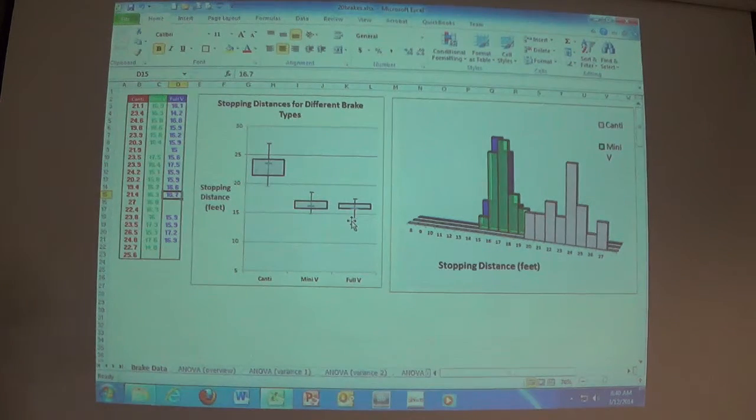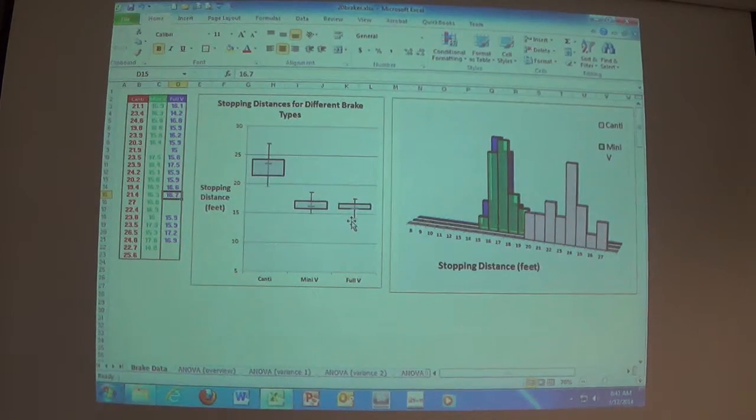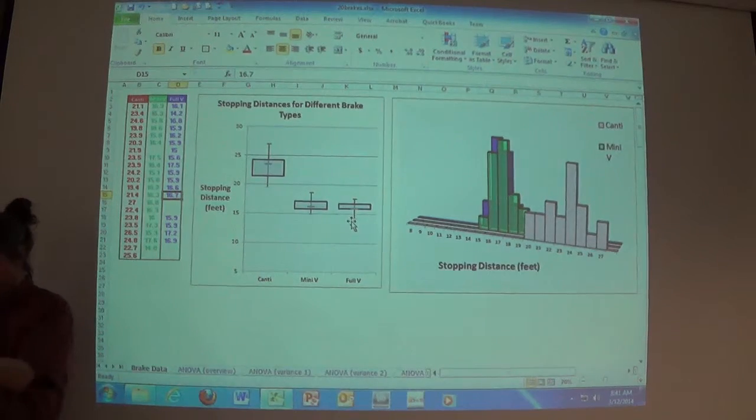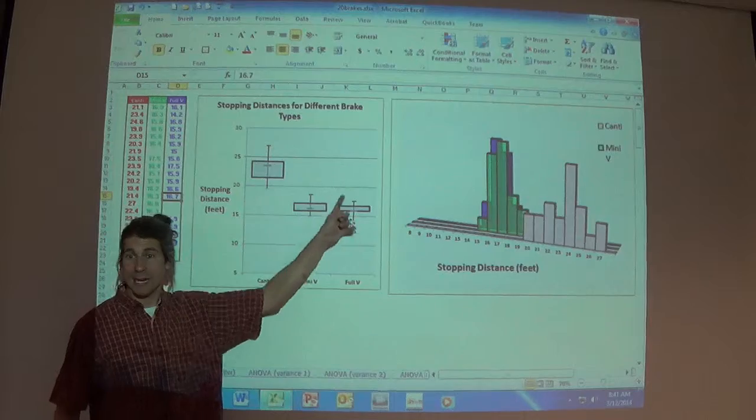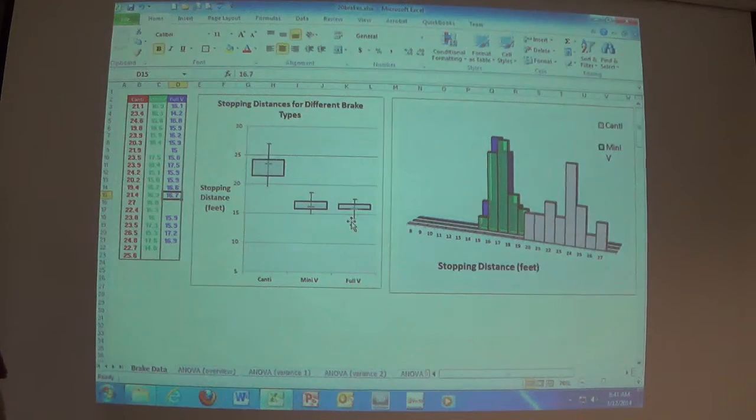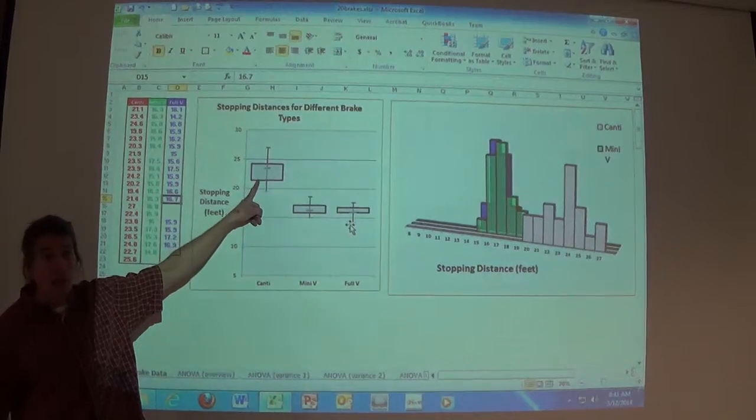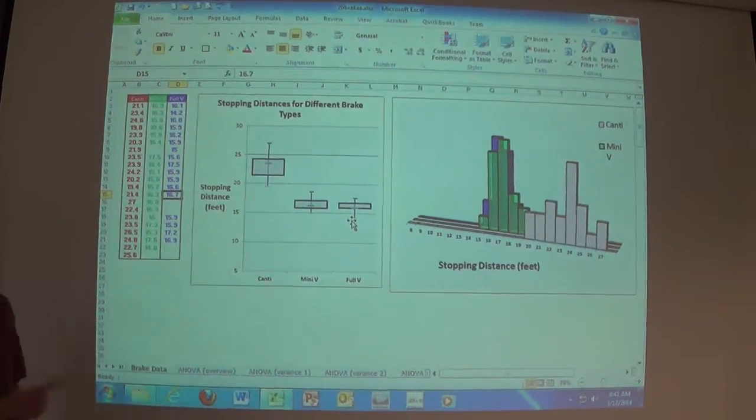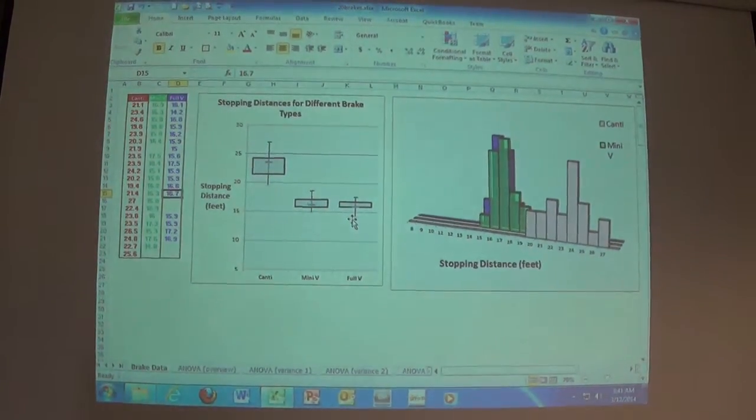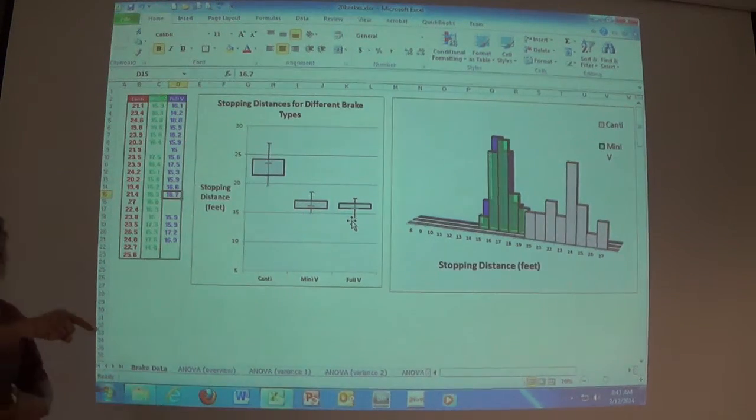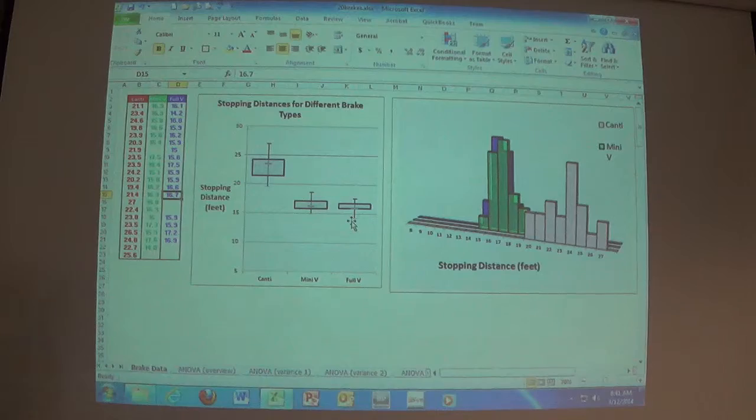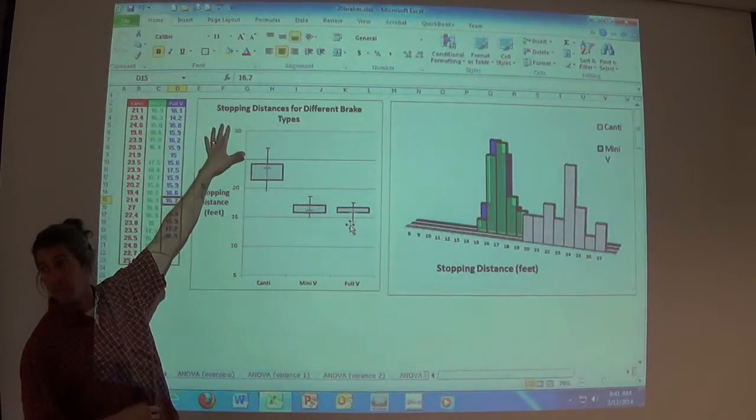There's your box plots. There's your histograms. So what's the first thing that looks, and this is why statistics is great, but your eyes are even better. What do you see by looking at the data results? The mini V and the full V look like they're extraordinarily similar. Might there be a tiny advantage with full V? Yes. Maybe, but it's too hard to eyeball. What is not too hard to eyeball? I am really glad I got rid of these things.